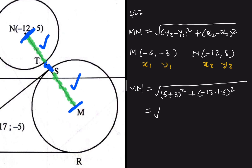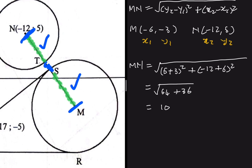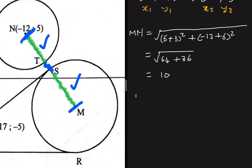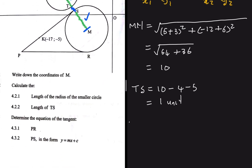So MN = √(8² + (−6)²) = √(64 + 36) = √100 = 10. Now, TS = MN − radius of smaller circle − radius of bigger circle = 10 − 4 − 5 = 1 unit. That is the length of TS.